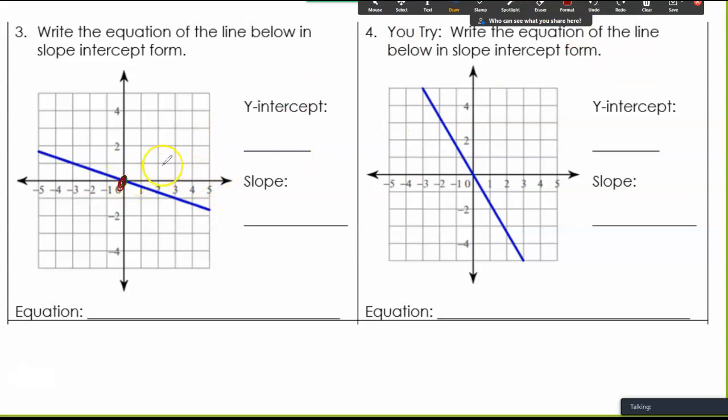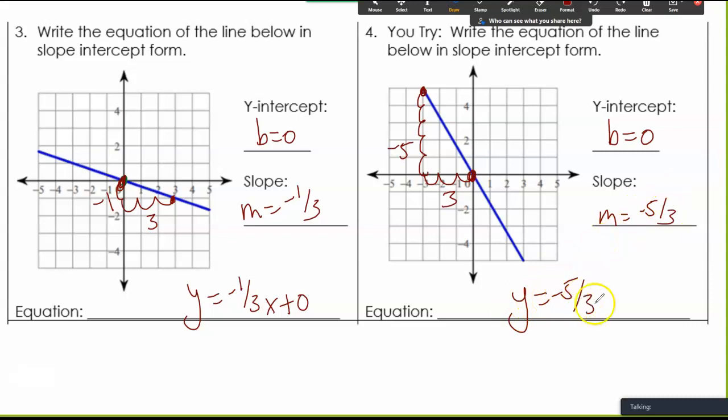My y-intercept here is zero. I'm going to pick another point. I fell 1, went right 3. So minus 1, right 3. Go ahead and pause and try 4 on your own. So we get from these points, I'd fall 5, right 3, and it would look like negative five-thirds x plus zero.